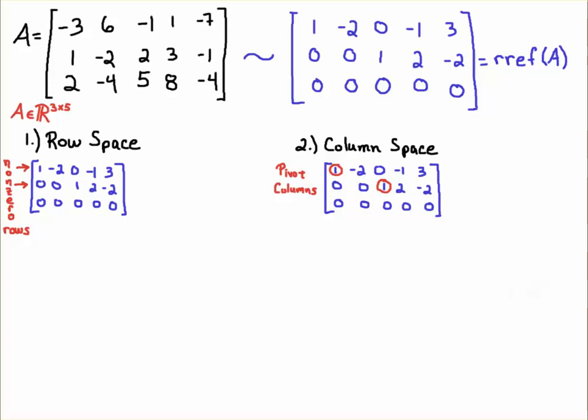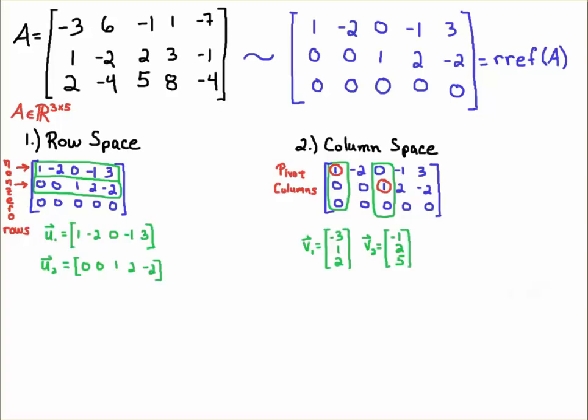For the row space, you identify the nonzero rows. For the column space, you identify the pivot columns. The nonzero rows for the row space will provide you the bases for the row space. So this top row here will be our basis, and this second row here will be another basis element, and that'll be the basis for the row space.